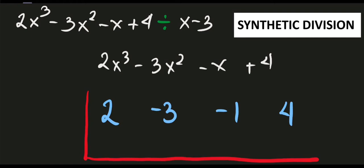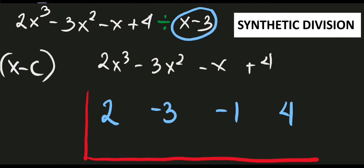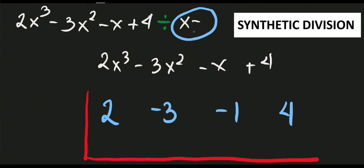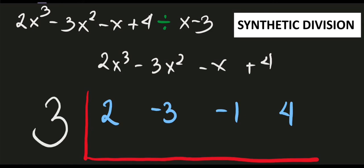Now observe our divisor: x minus 3. We need to rewrite the divisor in the form x minus c. Since we have x minus 3, the value of c is positive 3. Our technique is: if the sign is minus, automatically change it to positive. Since we have x minus 3, we use positive 3 as our divisor and encode it outside the bar.